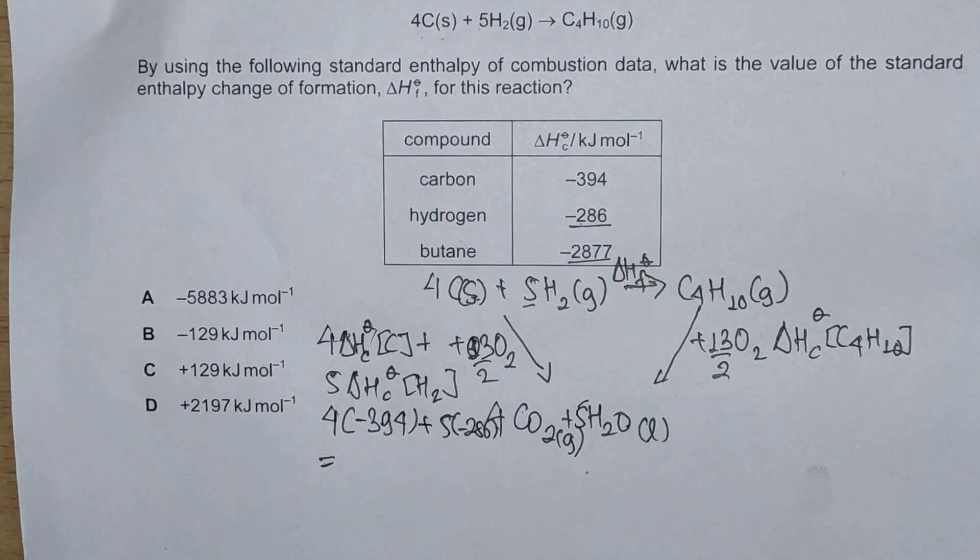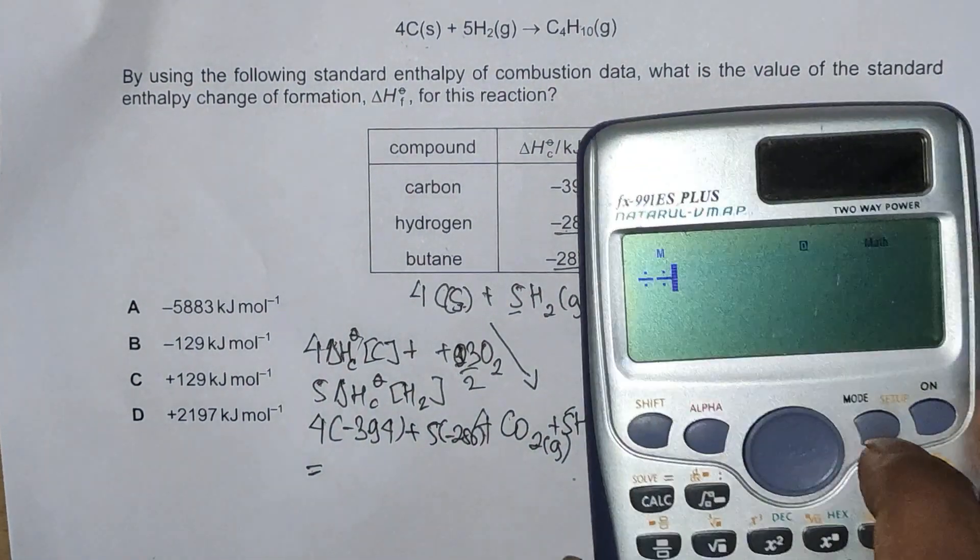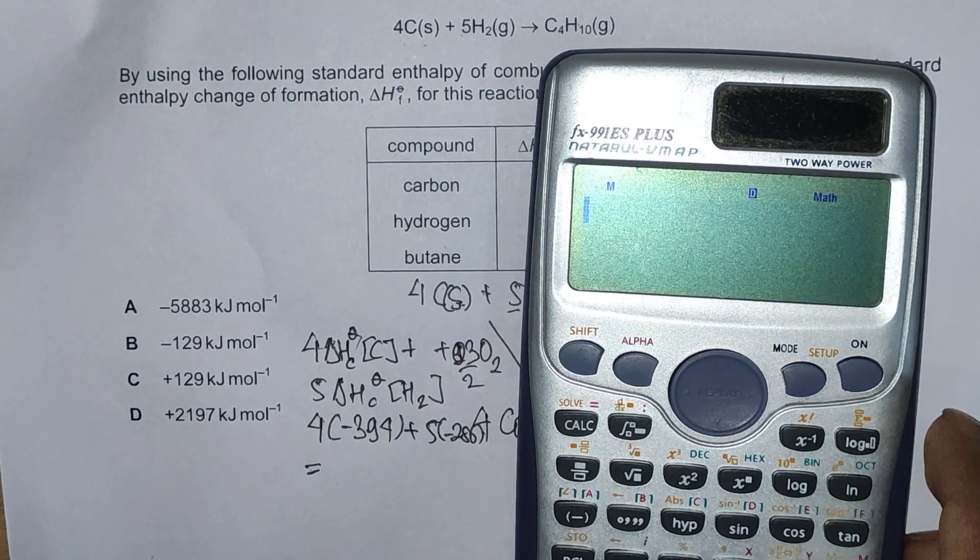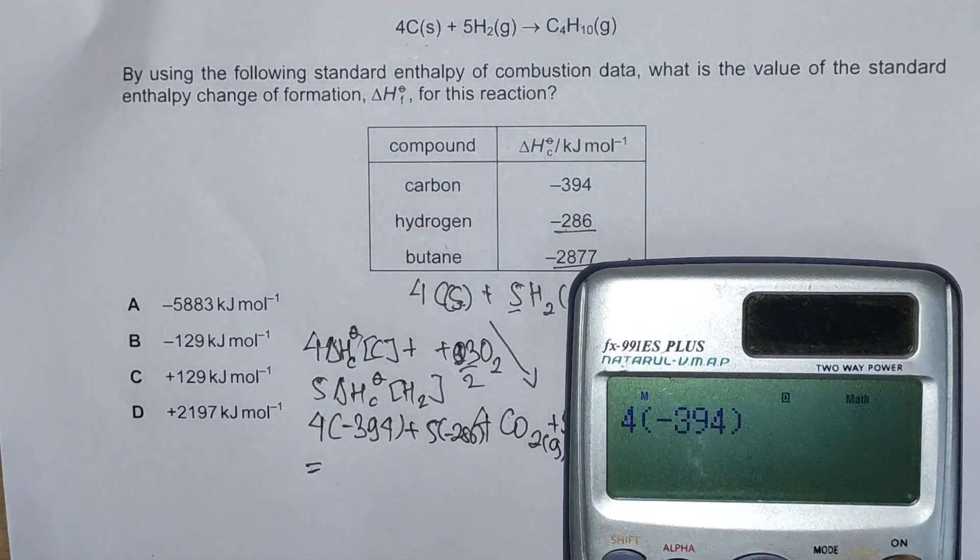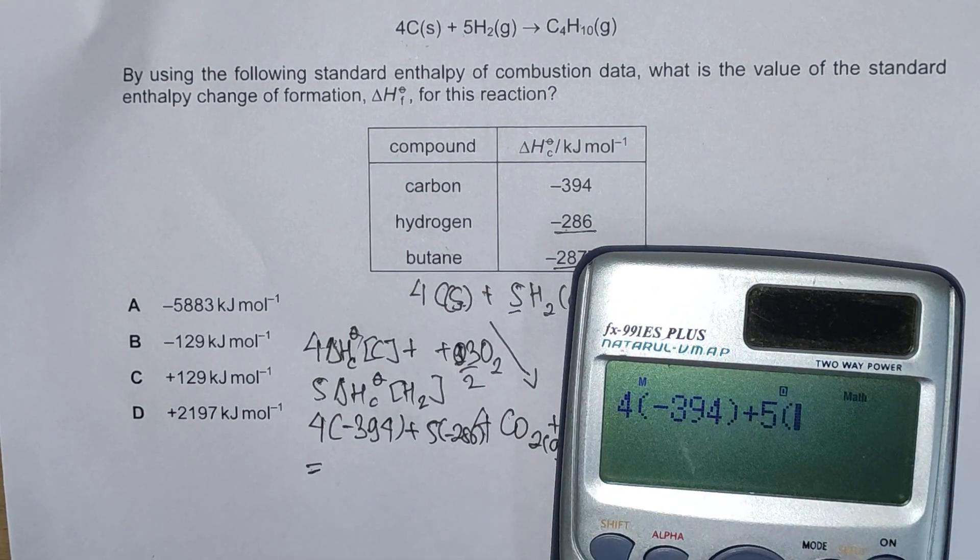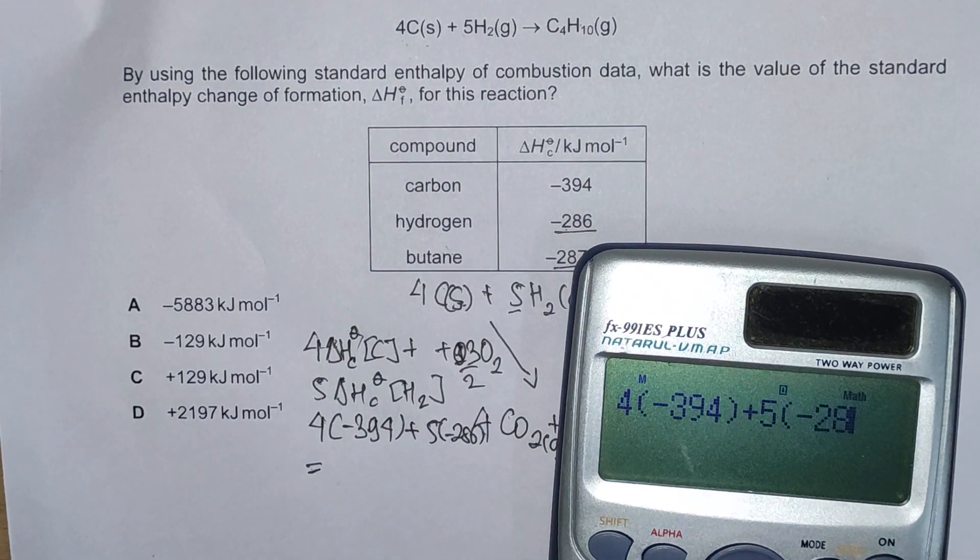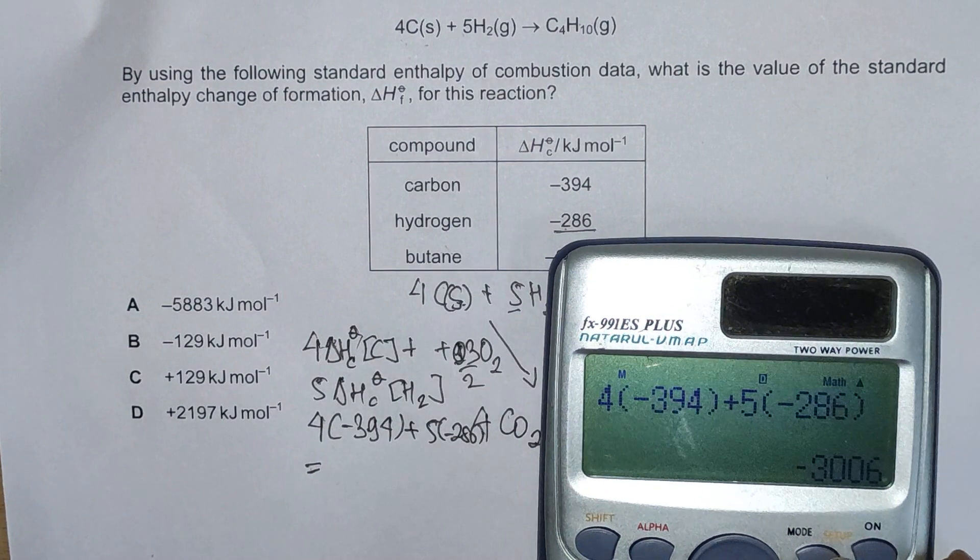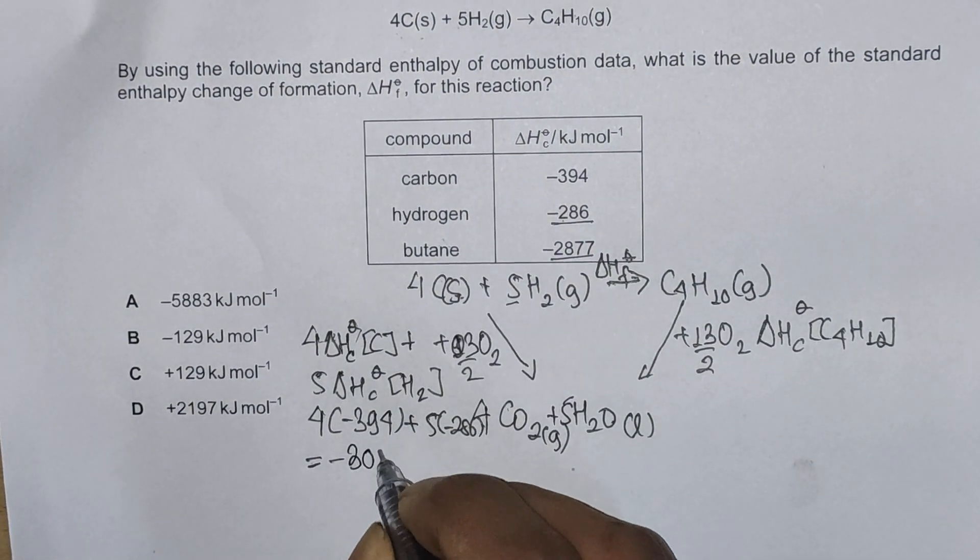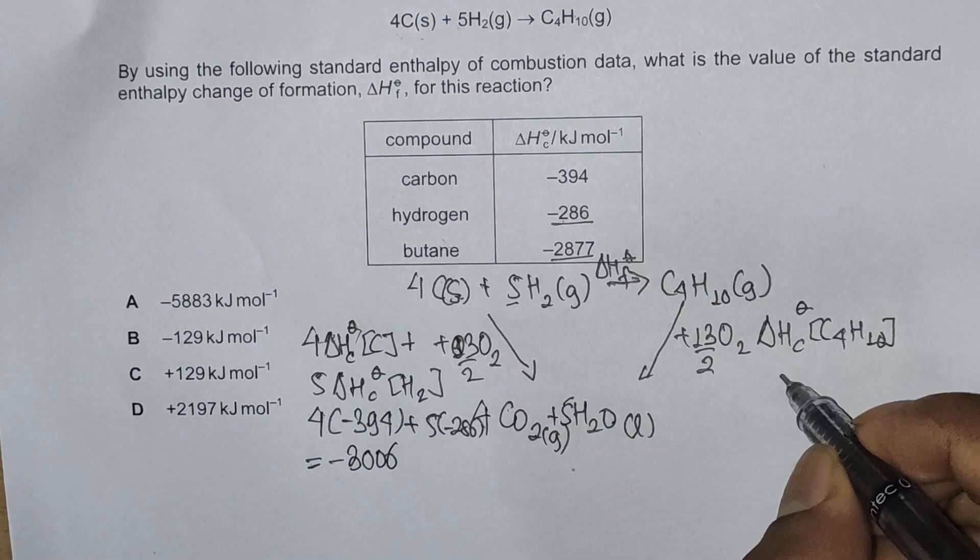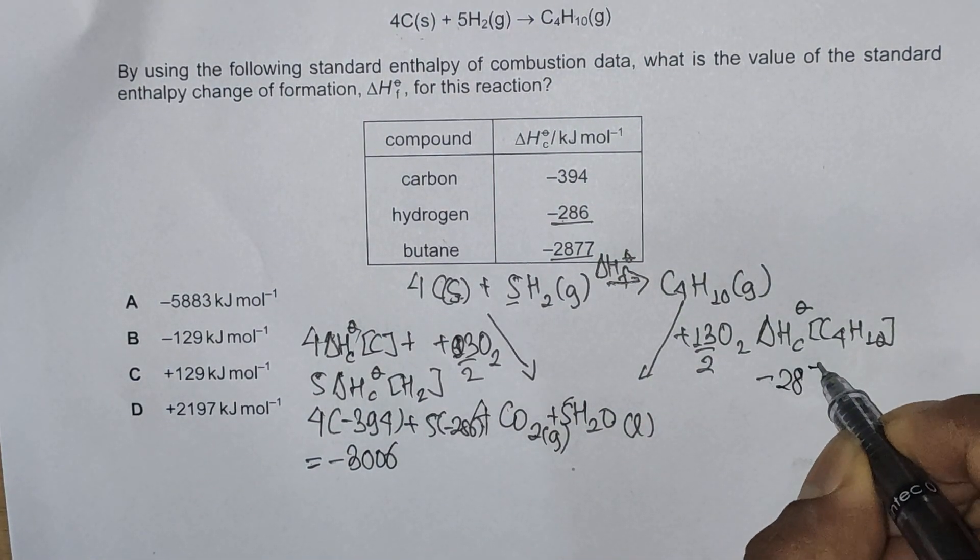Calculating the value, we'll have 4 times minus 394 plus 5 times minus 286. So this is minus 3006, and this is minus 2877.